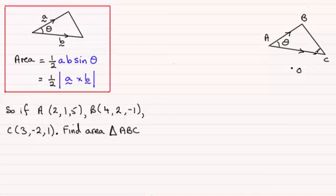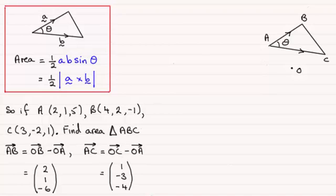Well if this is the case, then we need to come up with the vectors AB and AC. And in the usual way we're going to get something like this: AB will be OB minus OA, and that will turn out to be (2,1,-6). And similarly for AC you're going to get (1,-3,-4).